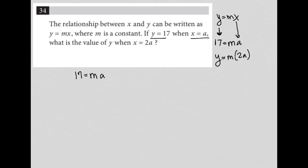But then we're also told that we're looking for the value of y, so it's going to remain the y variable when x equals 2a, right? So that means that the m stays, and instead of the a, I get a 2a. Now that means that